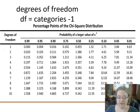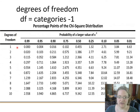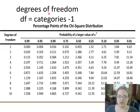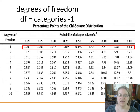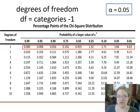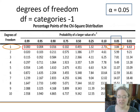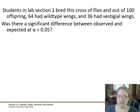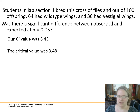We compare that to our chi-square distribution chart. We have our alpha value — in this case 0.05 — and our degrees of freedom, which is the number of categories minus one. We had two categories — wild-type and vestigial — so degrees of freedom equals one. Looking along that row at the 0.05 column, our critical value is 3.84. Our calculated chi-square of 6.45 is larger than the critical value of 3.84.